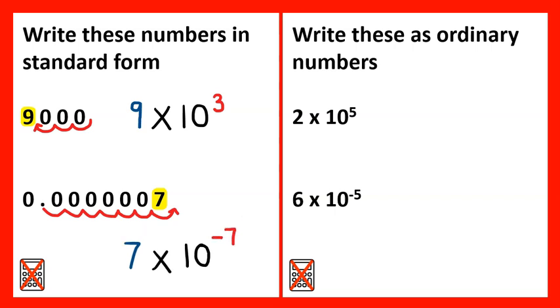We can do this in reverse and write these as ordinary numbers when in standard form. So the number at the front represents the significant figure that we need to use, which will be 2.